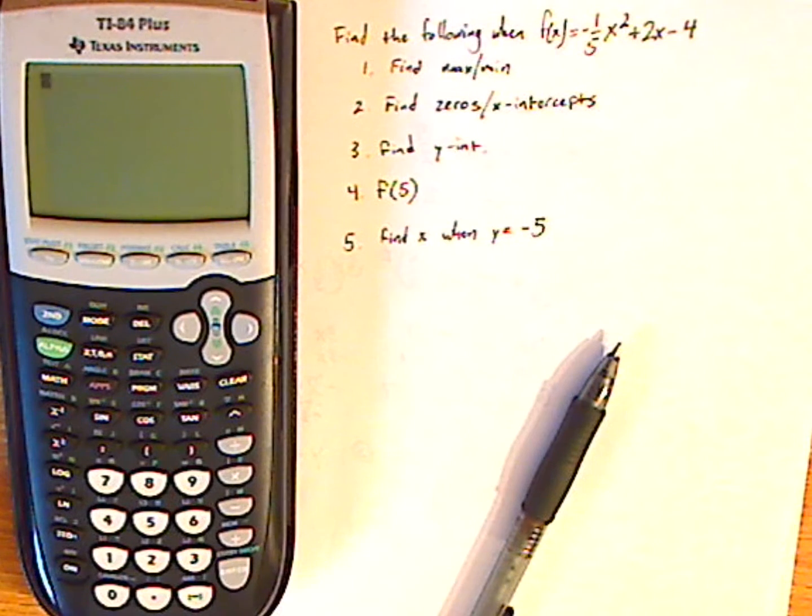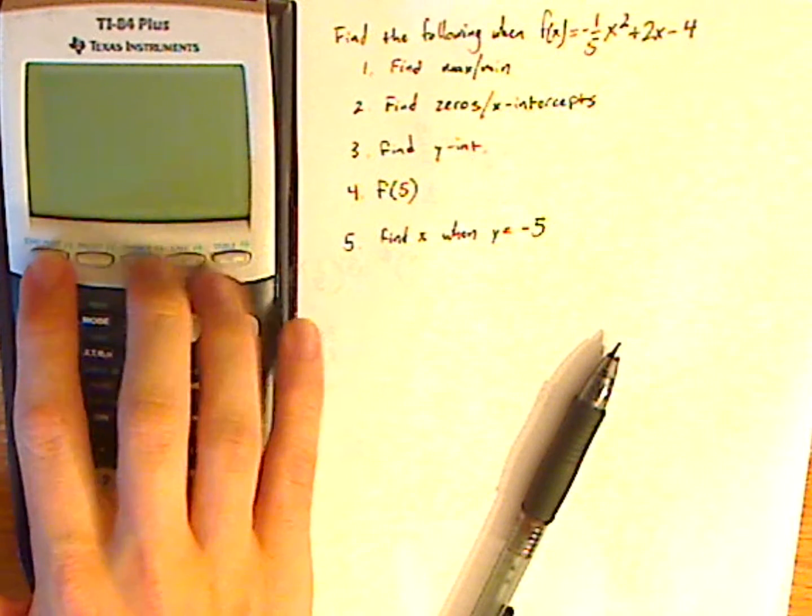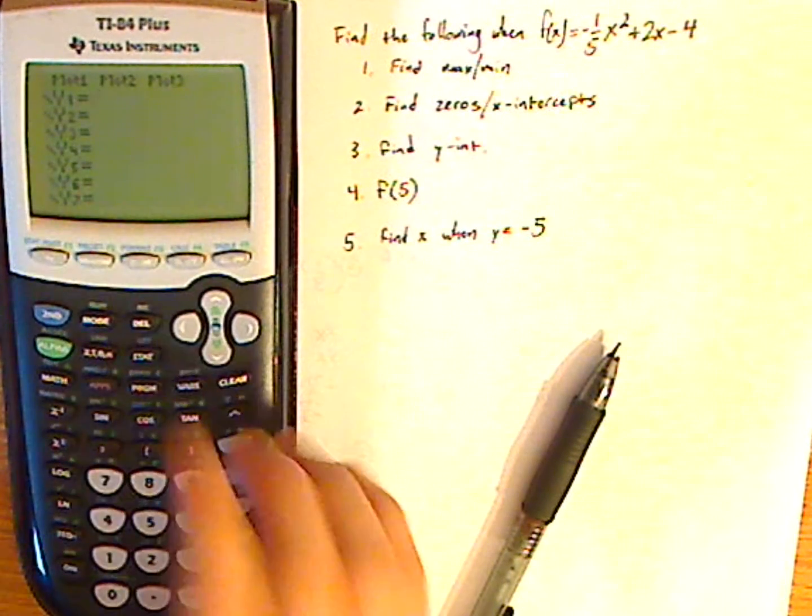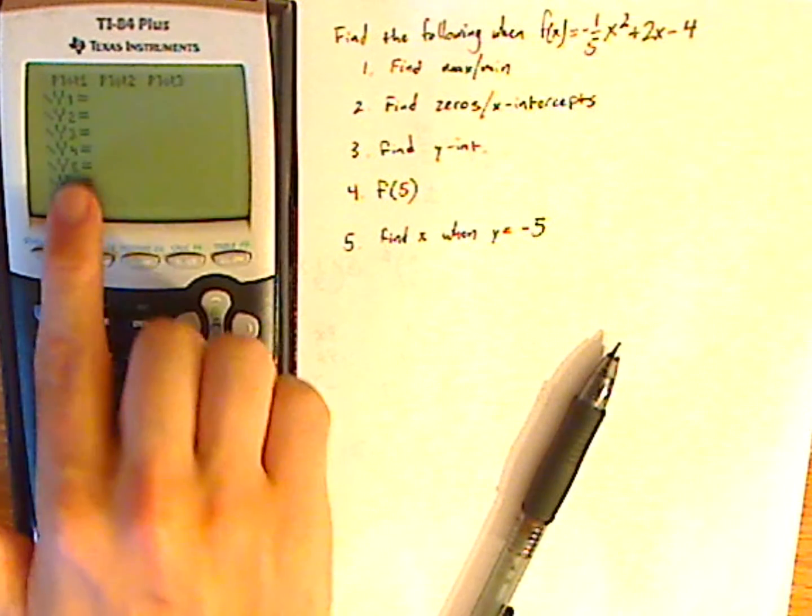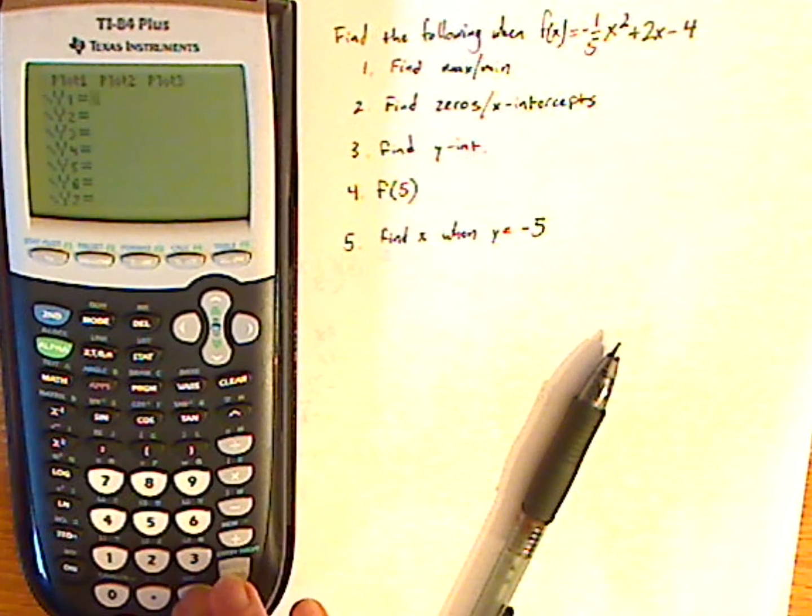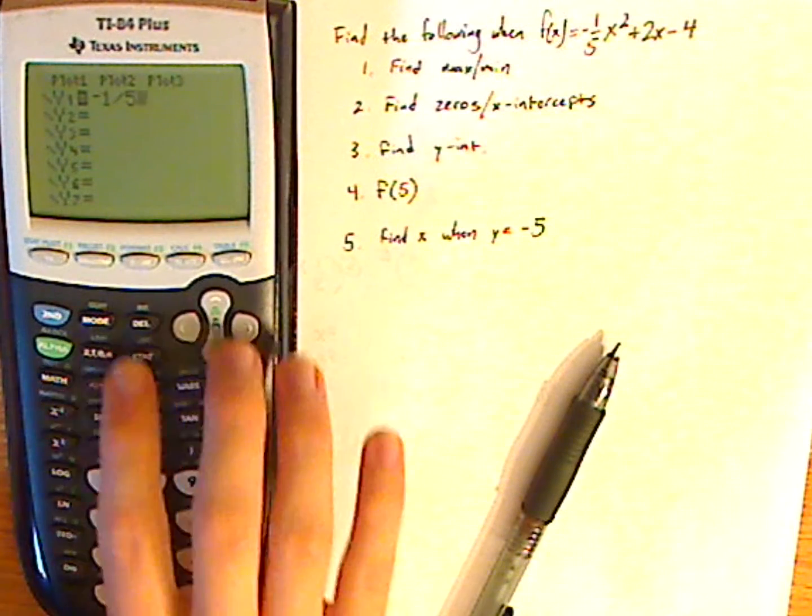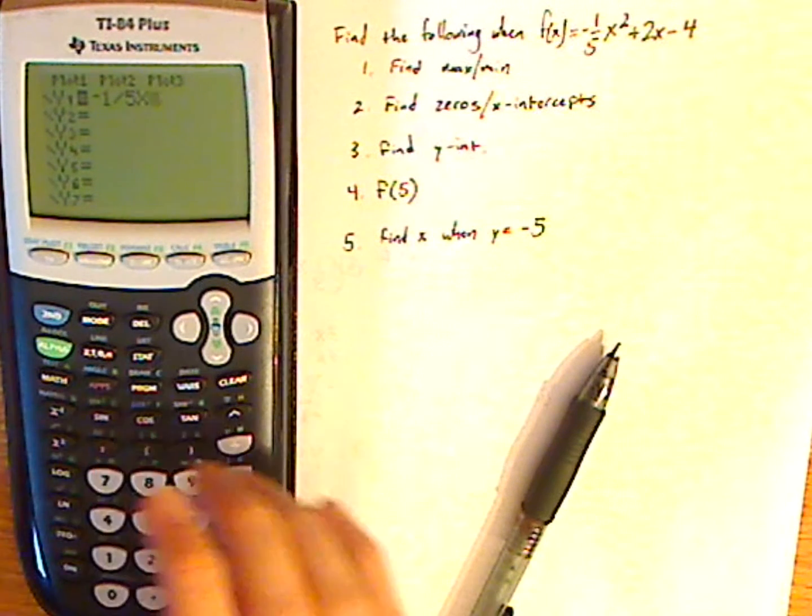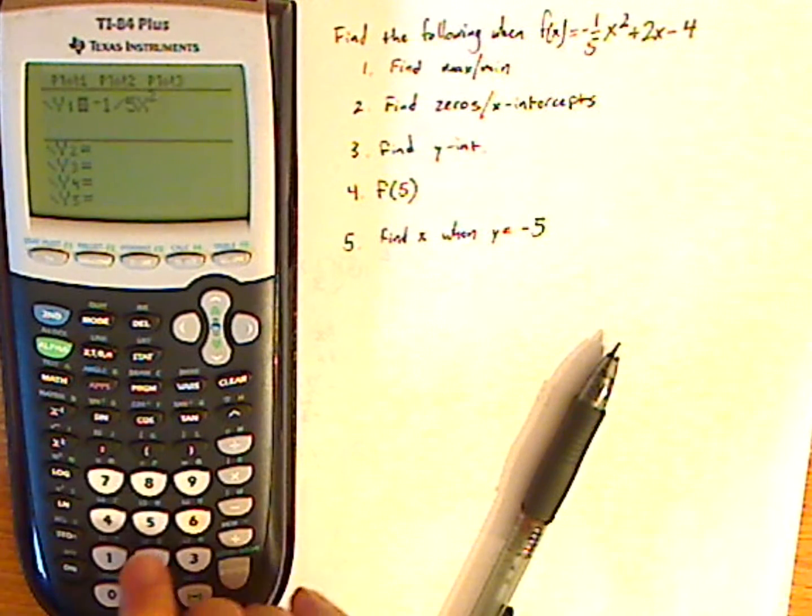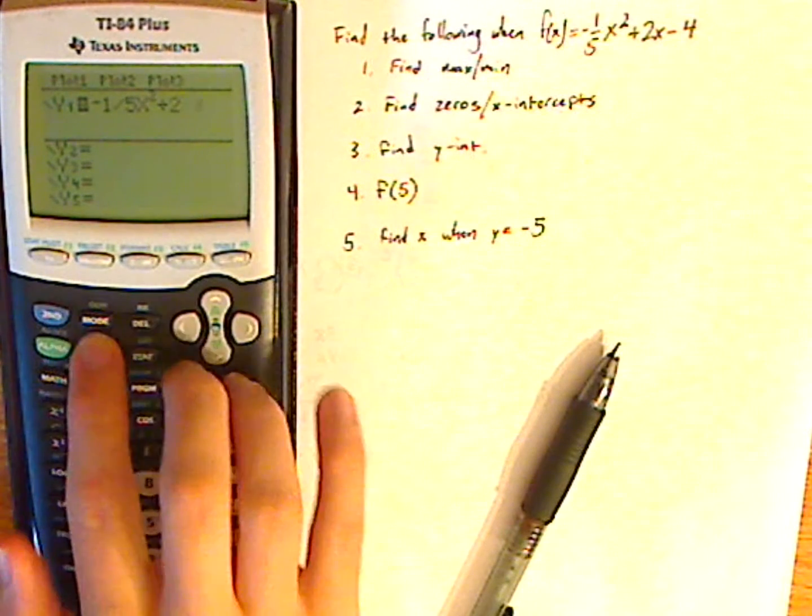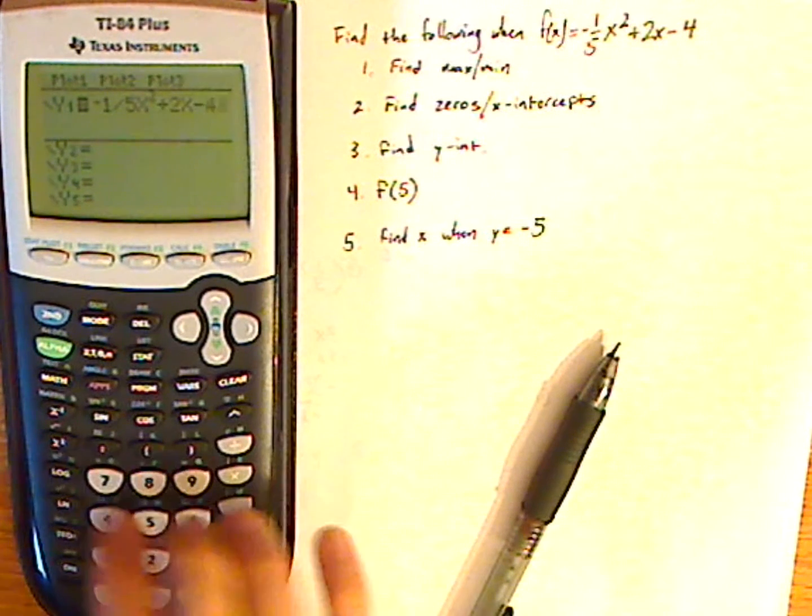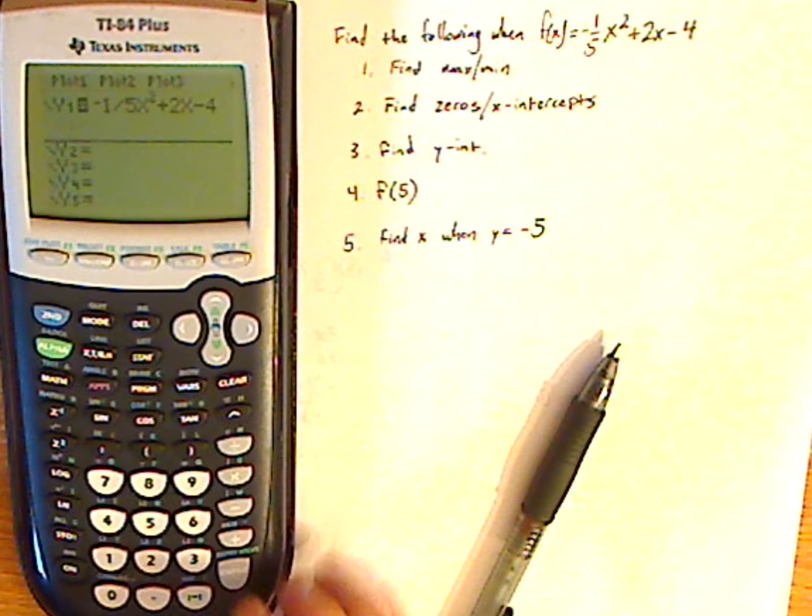All right, to find the max or the min, let's do that first, but before I do anything, I have to type in the function. So you go to y equals, you're going to see y1, y2, etc. Just fill in y1, so negative, and make sure that you push the negative here, or you're going to get an error. 1 divided by 5, variable button gives me x, square it, plus 2, variable button gives me another x, minus 4, close parentheses.